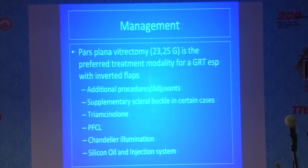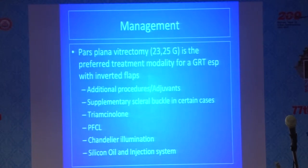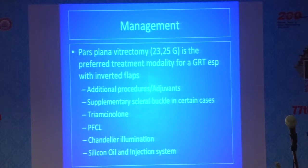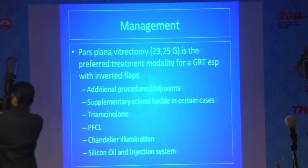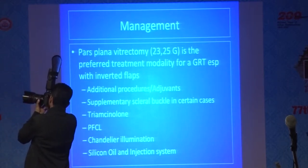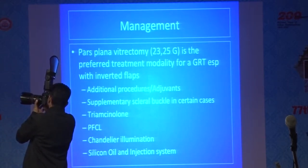In management, pars plana vitrectomy in today's era — with either a 23 or 25 gauge — is the preferred treatment modality for a giant retinal tear, especially those with inverted flaps. In cases where there are no inverted flaps and PVR is not significant, some may be managed with a primary buckle alone. But once you have an inverted flap, we have to proceed with pars plana vitrectomy. There are certain additional procedures or adjuvants required, which are specific to each case.